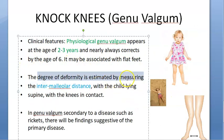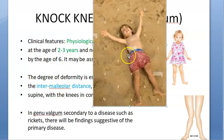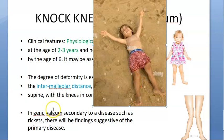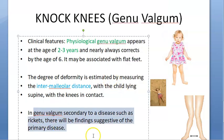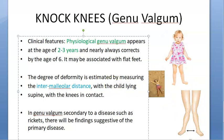The degree of deformity is estimated by measuring the intermalleolar distance with the child lying supine with knees in contact. You make the child lie down with knees touching each other and then measure the intermalleolar distance. That gives you the degree of the deformity. If genu valgum is associated with rickets, you will see other features of rickets in that child.